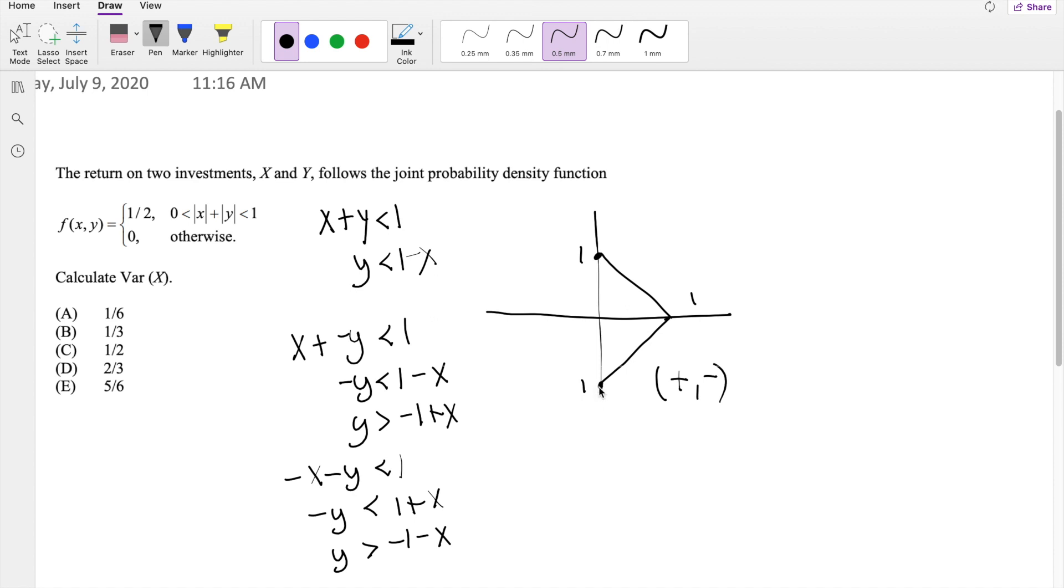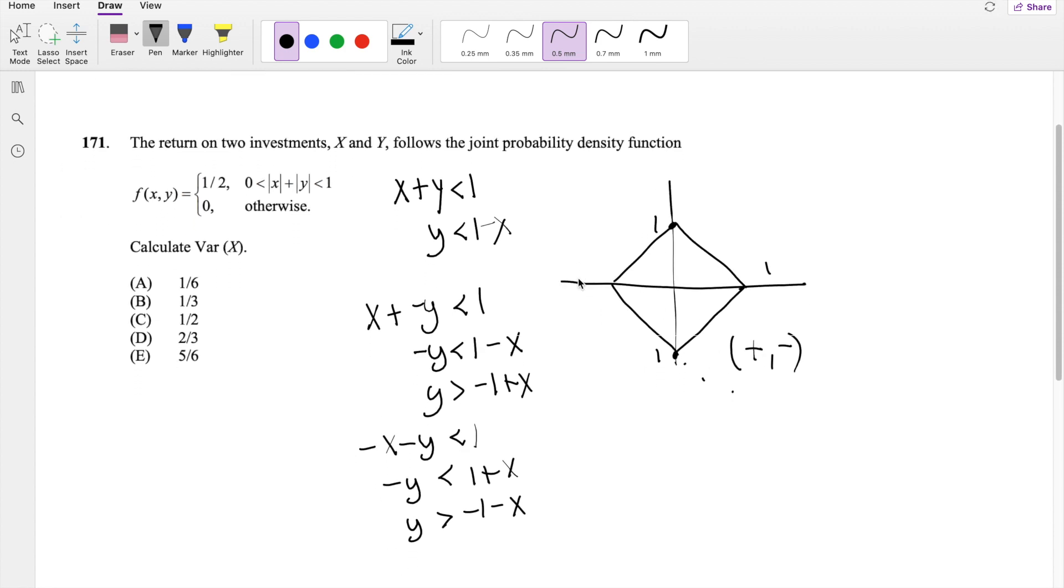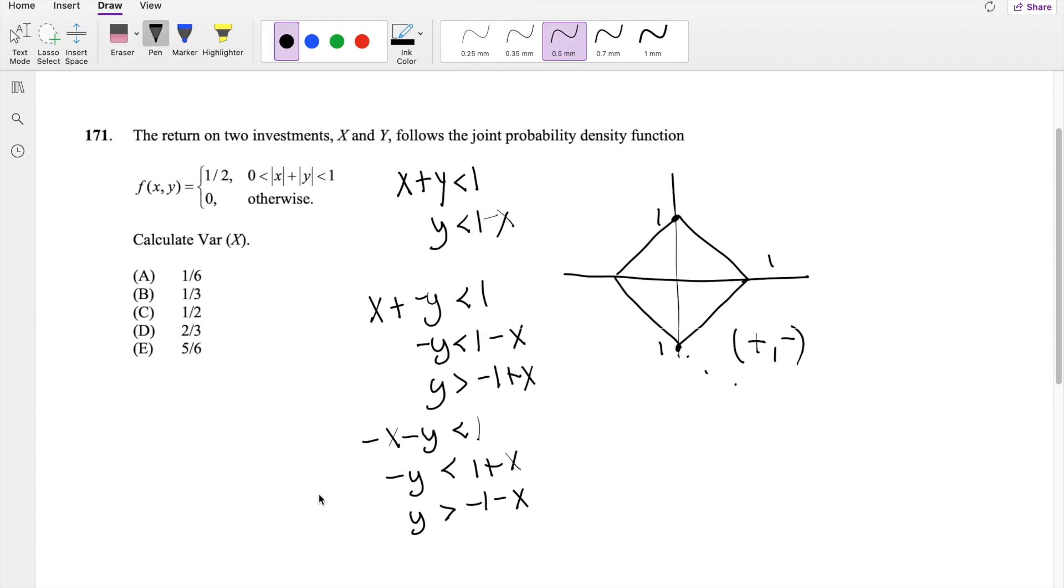So it's going to look like this. But it's in the third quadrant, so it's going to look like this. As you can imagine, it's a diamond, it's a uniform diamond, and we're trying to find the variance of x. We know the variance of x formula is equal to the second moment minus the first moment squared.